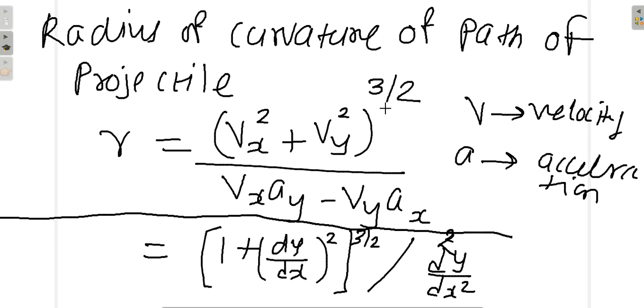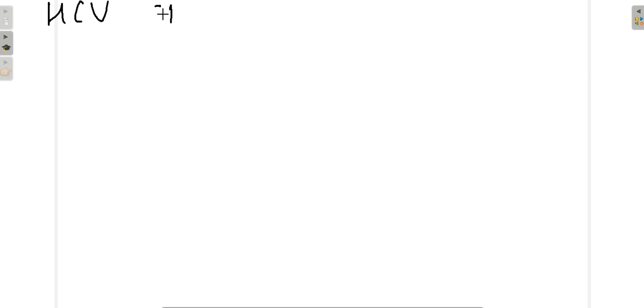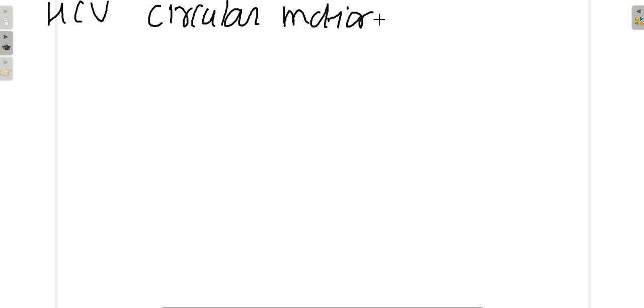Just remember: (vx² + vy²) to the power 3/2 upon (vx·ay − vy·ax). That is my advice to you — there is no point going into the proof. There are two equations in HC Varma based on this formula, from the chapter on circular motion. It is on page number 115, example number 25.